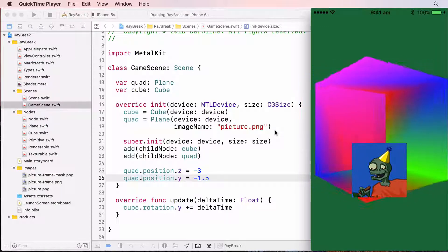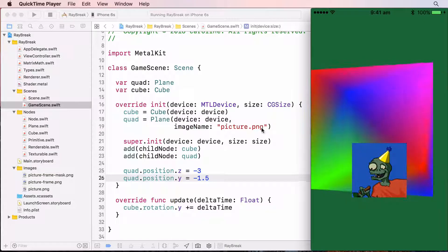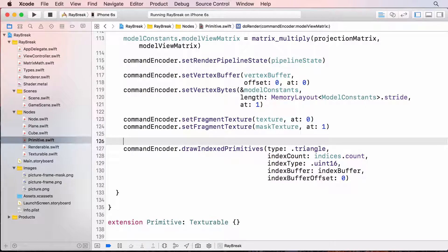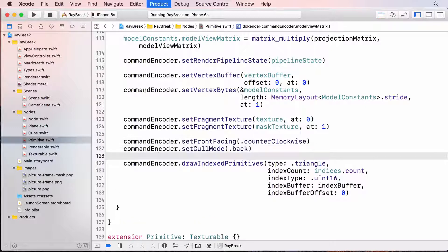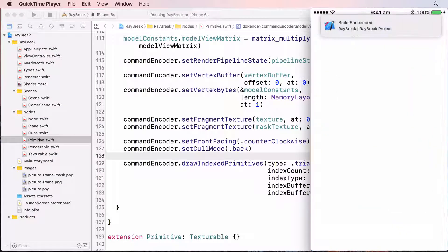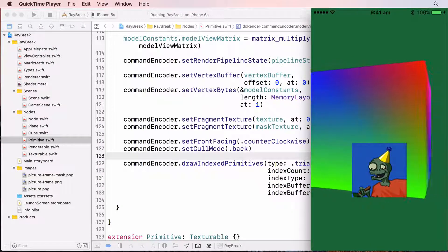So just as I showed you in the slide, I'm going to set the winding order and cull those back faces. I'll do this in primitive before the draw call. Now when I build and run, the cube's back faces are culled, which is the result we wanted.